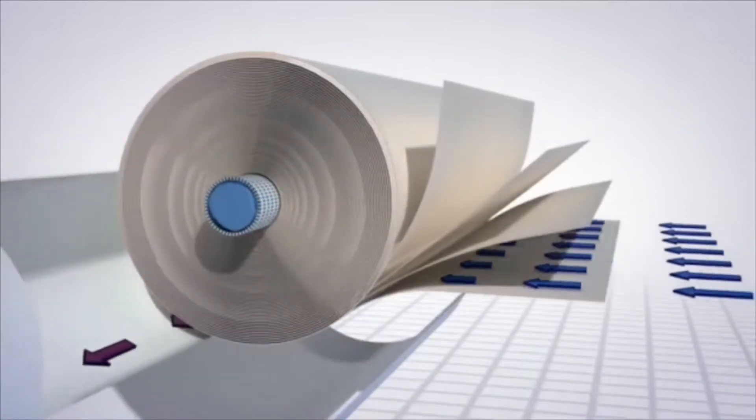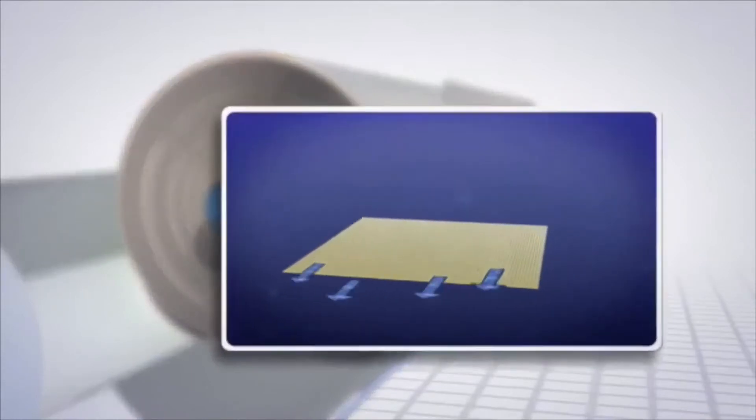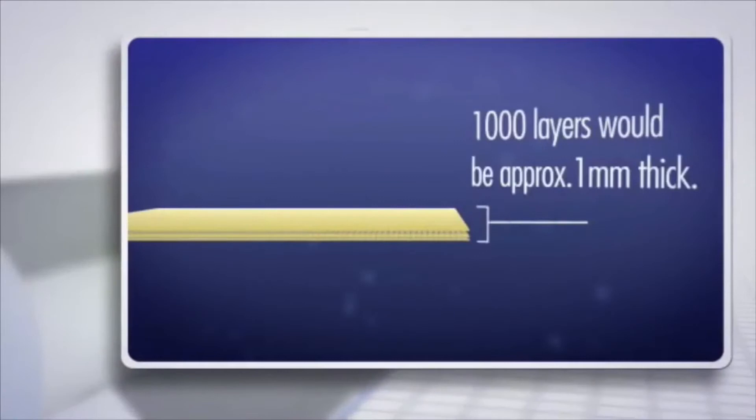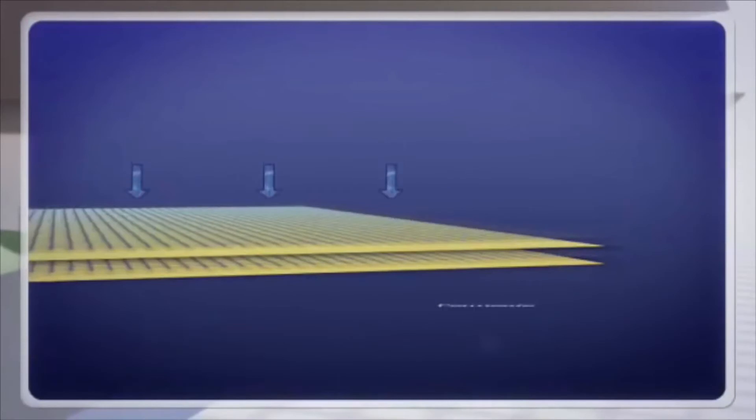As water enters the vessel it flows over the membrane surface as it moves from one end of the vessel to the other. The membrane layer is extremely thin. It allows water to pass through or permeate while preventing other compounds from passing through.